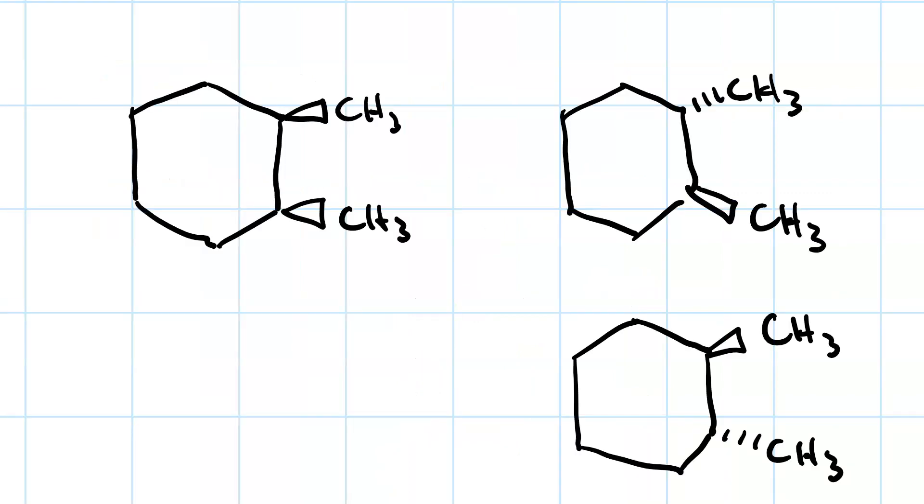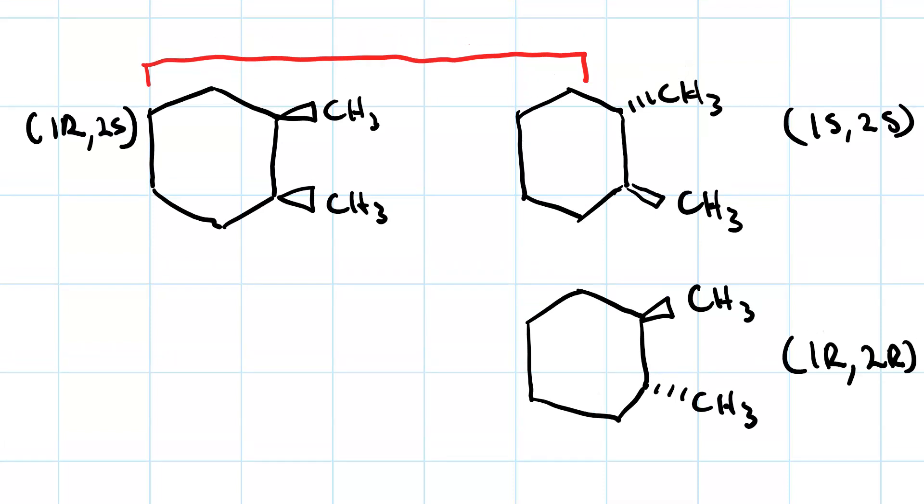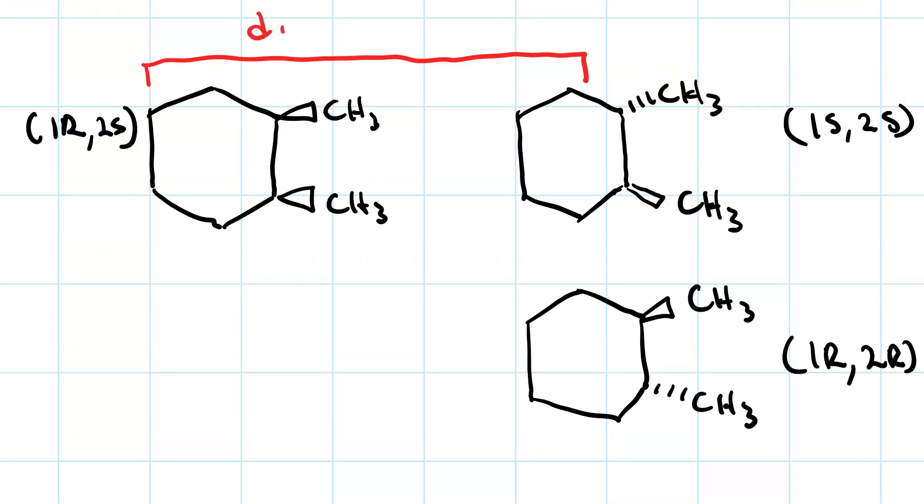So, just to recap. The first two molecules have one of their two chirality centers inverted. So, they are a pair of diastereomers.